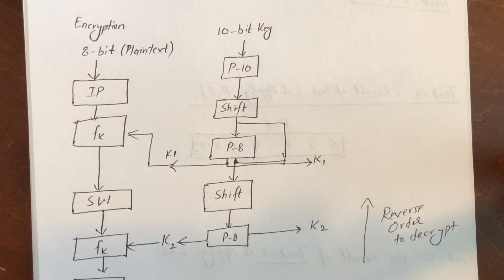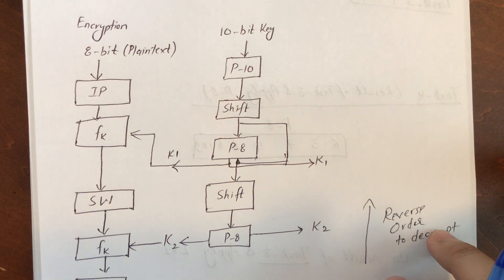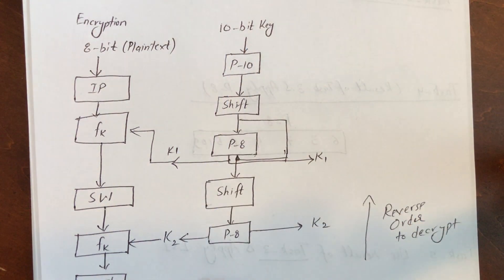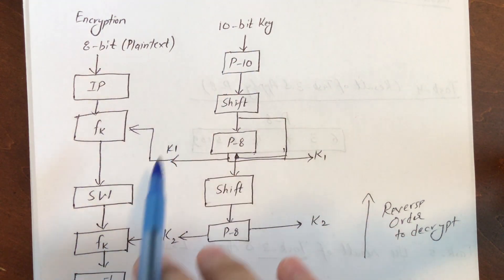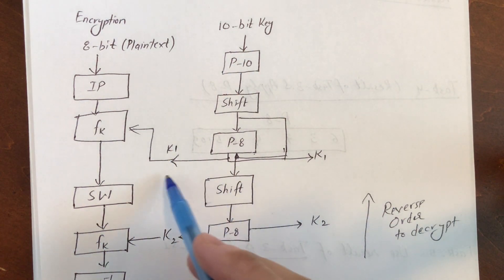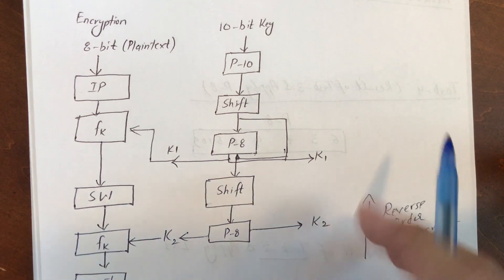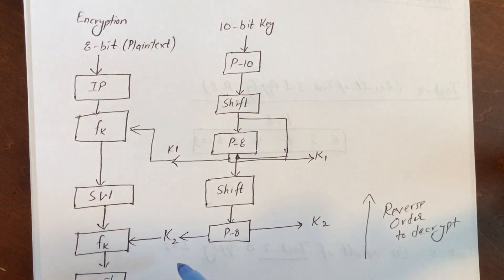Let's start the remaining Lab 6. This is basically the Simplified DES algorithm. The central part — the middle part — is basically the key generation algorithm. Both parties, sender and receiver, share the same key generation algorithm to generate identical keys. For tasks one through six, we need to create these two keys.